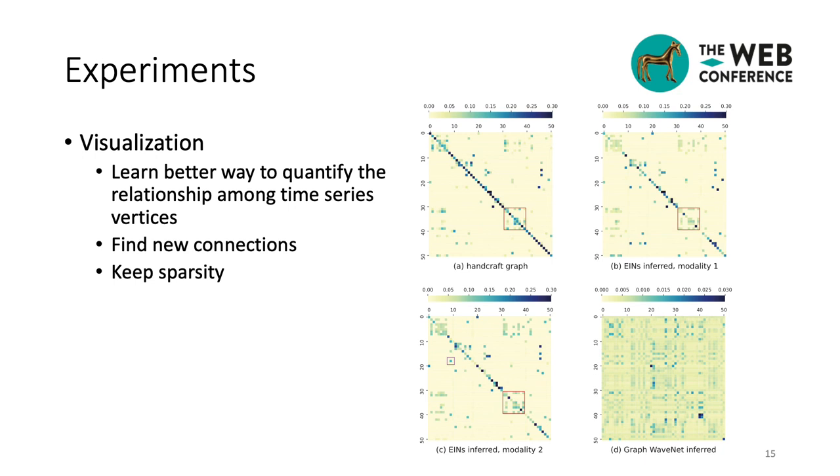In this slide, we visualize the spatial dependencies of the last 51 vertices on the Metropolitan Los Angeles dataset, with A from handcraft labels, B and C from EINs, and D from graph wavenet. As we can see in the red rectangle, the EINs gave different spatial labels compared with the handcraft ones, which promoted the GCNs to make more accurate predictions. Besides, in the purple rectangle, the EINs found a new linkage, which brought the diversity of the structure.